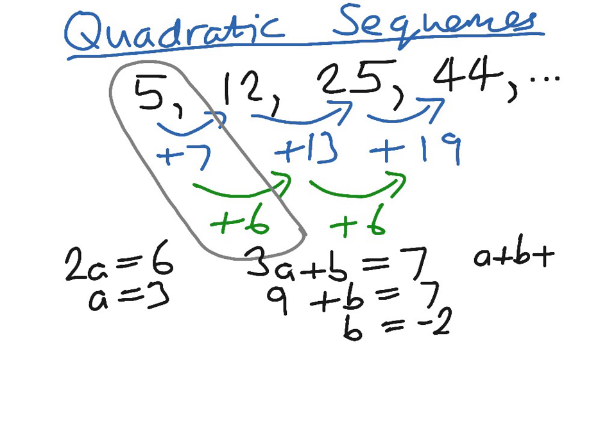Last of all, we have that a plus b plus c equals the first term of 5. We know that a is 3, b is negative 2, and then we have c. So 3 take away 2 is 1, plus c equals 5. Therefore c must equal 4.